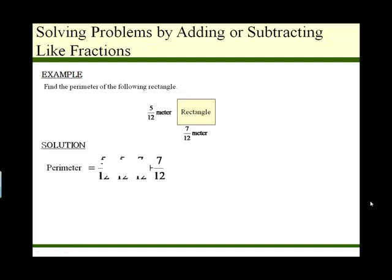So the perimeter is given by the sum of those numbers: 5 twelfths, 5 twelfths, 7 twelfths, 7 twelfths. Because they all have the same denominator, it's easy to just add the numerators together. We get 5 plus 5 plus 7 plus 7, 24 over 17.